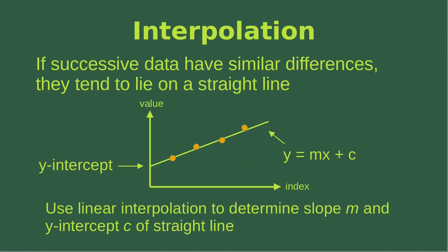Now we have to talk about the meaning of interpolation in this search process. Suppose we have four data points, and when we plot the index together with the value, we can see that these four points tend to lie on a certain straight line. This happens when successive data have similar differences, so that they lie on a straight line with slope m and y-intercept c. If we have this kind of data, we can use linear interpolation to find out the slope m and y-intercept c of that straight line.